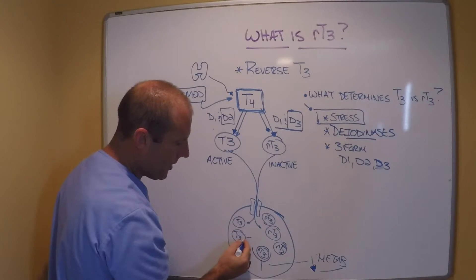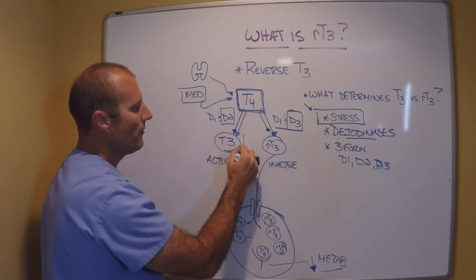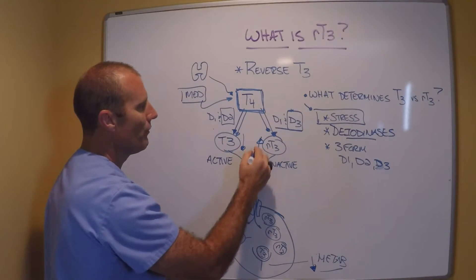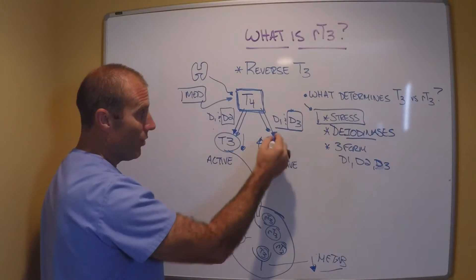and how much of that T3 binds to this receptor. Because if I make decreased amounts of T3 and increased amounts of reverse T3, this will still look the same, but I may get more of this.